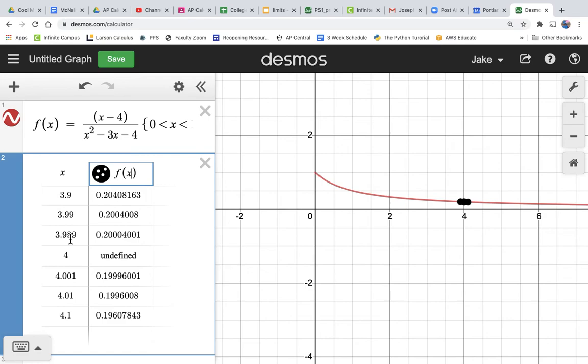Well, from the left, from less than 4, it's getting very close to 0.2. And from the right, from above 4, we're getting very close to 0.2. So it looks like the limit is 0.2.